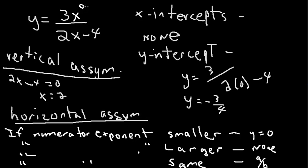Notice this is 0, this is an understood 1. So, here, the numerator exponent is smaller than the denominator exponent. So, for this particular function, it has a horizontal asymptote of 0.